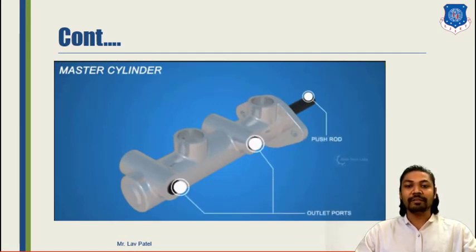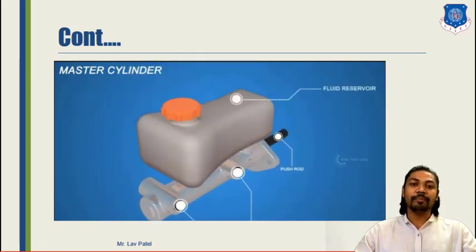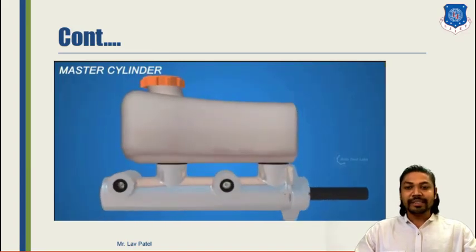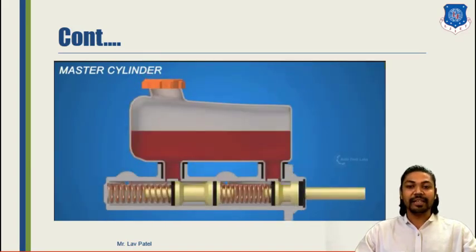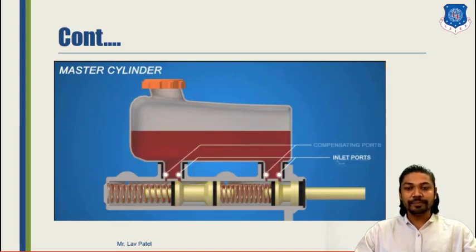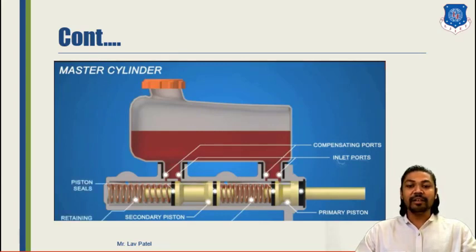Furthermore, we will see about the actual operation of the master cylinder. You can see that a push rod is there which can be operated with the help of the foot pedal. Two outlets are there and a fluid reservoir or brake fluid reservoir is mounted on top of the assembly. This is a diagram of a tandem master cylinder; the red colored fluid has been shown in the figure with two inlet ports and compensating ports to break vacuum or break bubbles.